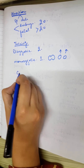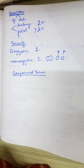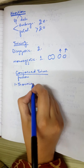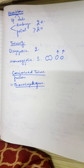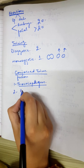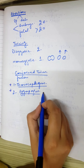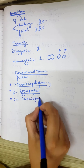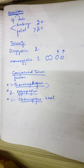Next are conjoined twins, which is a very important abnormality. This is the fusion between two twins in the same womb. The first type is thoracopagus, where the two twins are fused at the anterior thoracic region. The second type is pygopagus, which is fusion at the back. The third type is craniopagus, which is fusion of the head region.